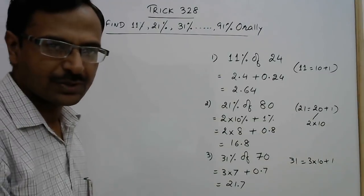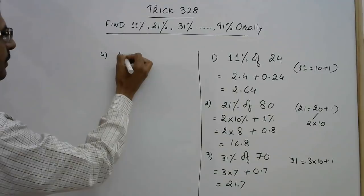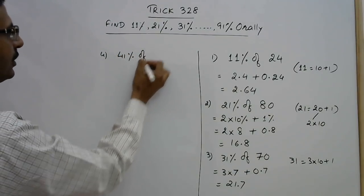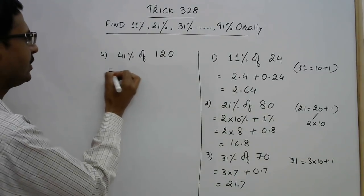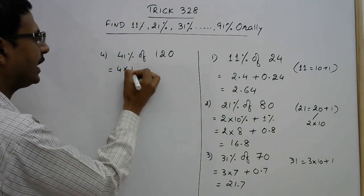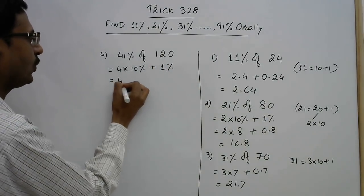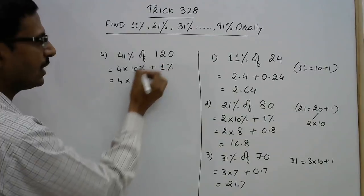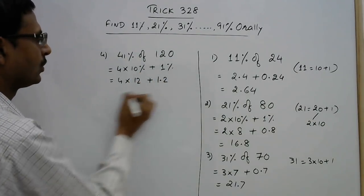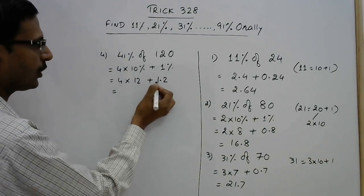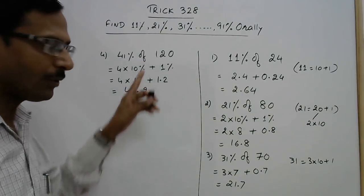So all the percentages you can calculate using this method. See this time we have say 41 percent of, take the number to be larger number, say 120. Now see, 4 into 10 percent plus 1 percent, 41 percent. So 4 into, what is 10 percent, this is 12, plus what is 1 percent, 2 digits from the right side, 1.2. So this is 48, 49.2 is the required percentage, 41 percent of 120.